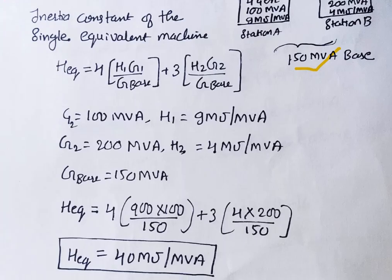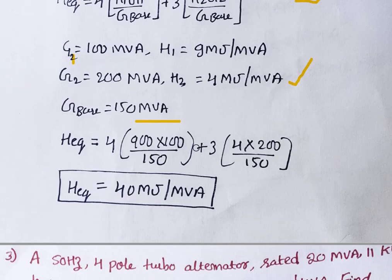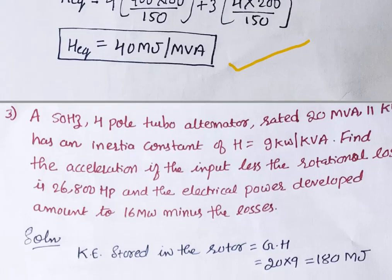Substituting G1 = 100 MVA, H1 = 9, G2 = 200 MVA, H2 = 4, and G_base = 150 MVA into the equation, we get H_equivalent = 40 megajoules per MVA. That is the clearest and most straightforward result.